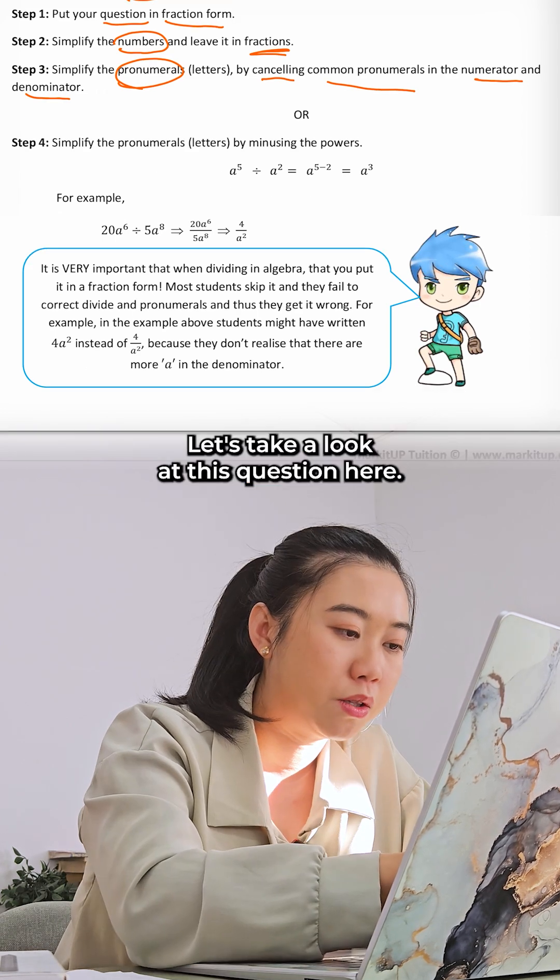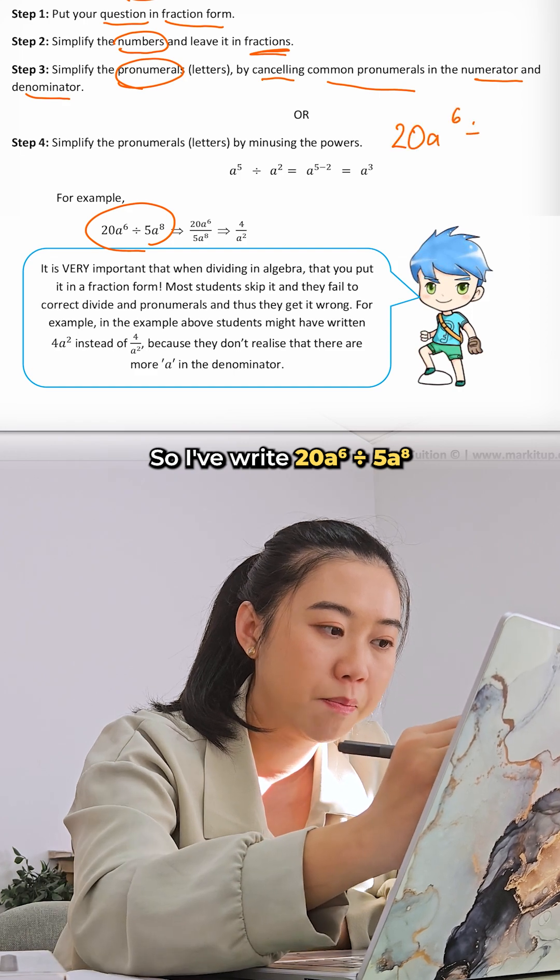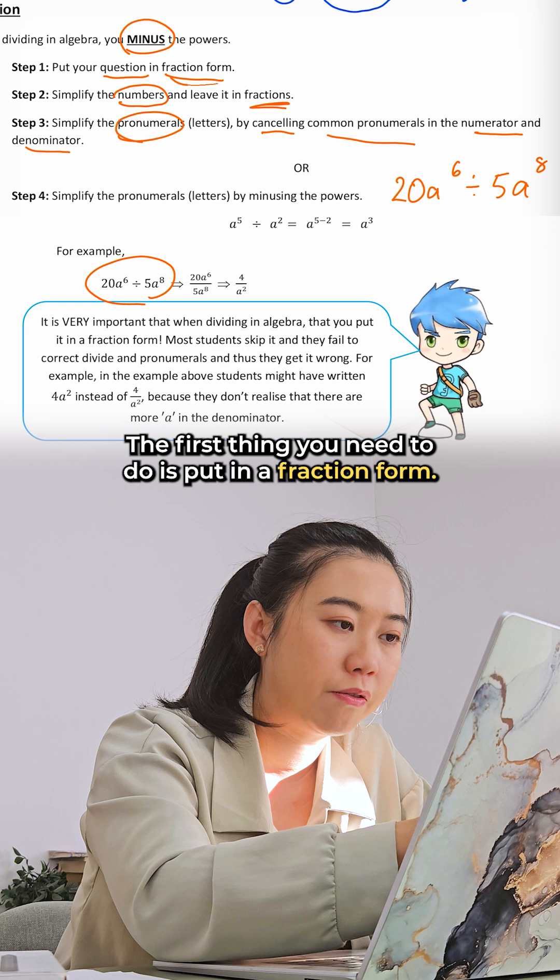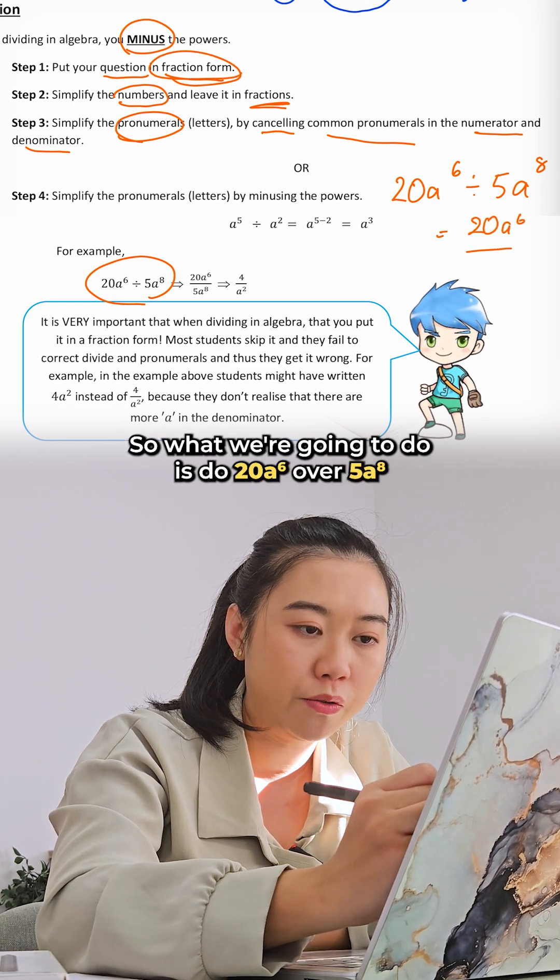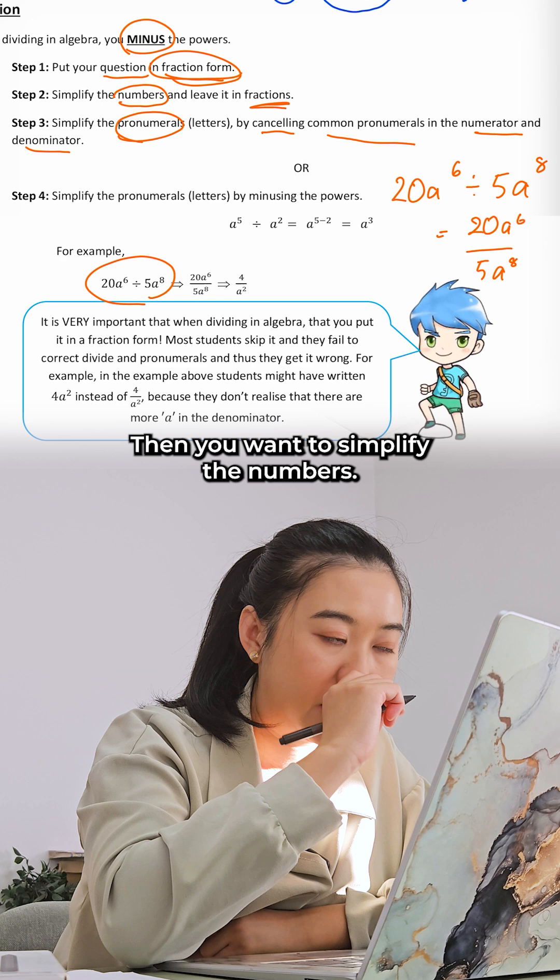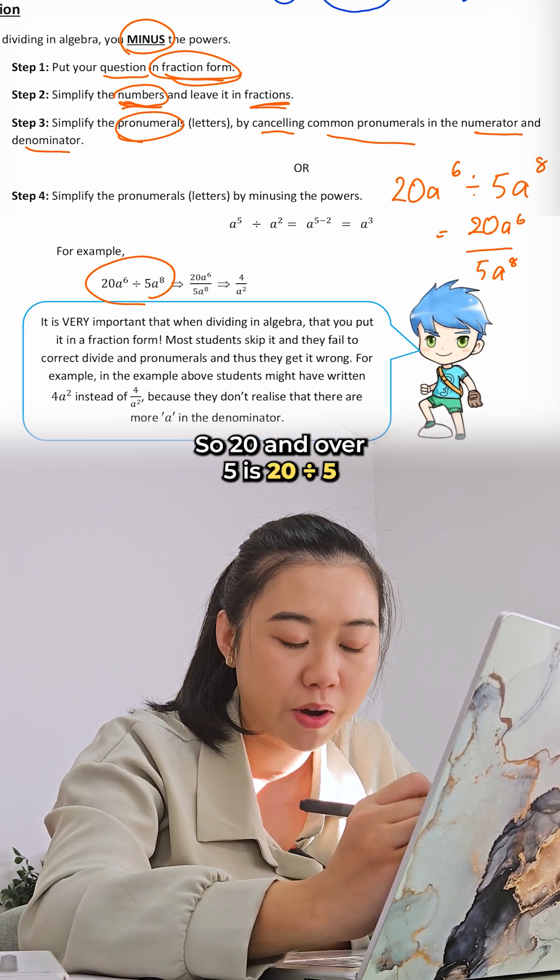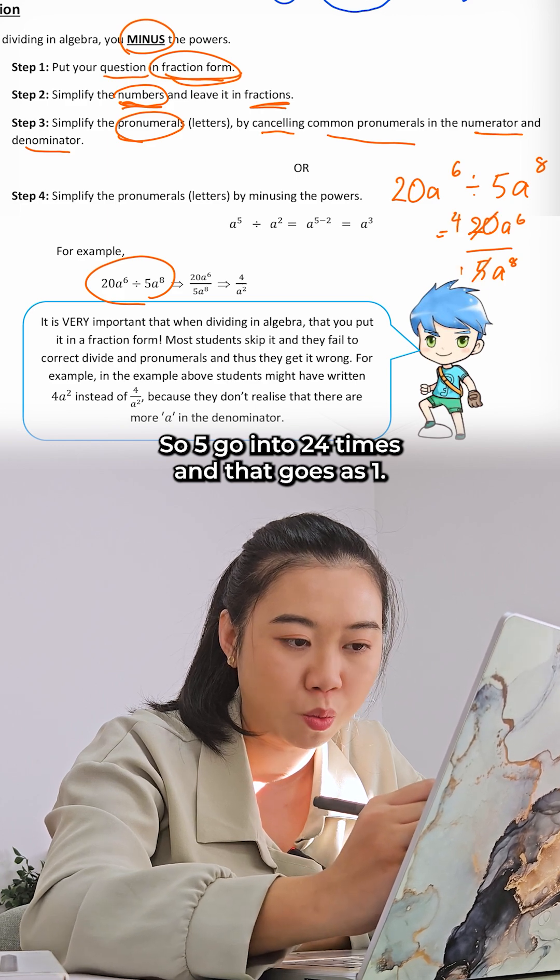Let's take a look at this question. I wrote 20a to the power six divided by 5a to the power of eight. The first thing you need to do is put it in a fraction form, so 20a⁶ over 5a⁸. Then you want to simplify the numbers. 20 divided by 5 is 4.